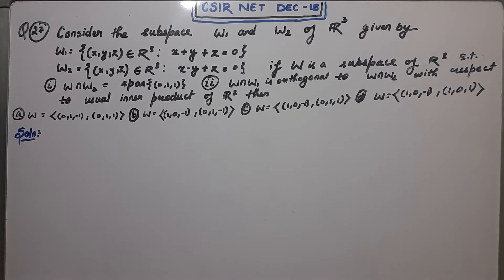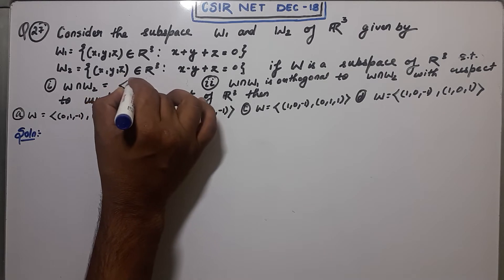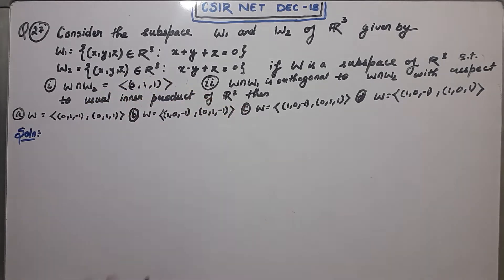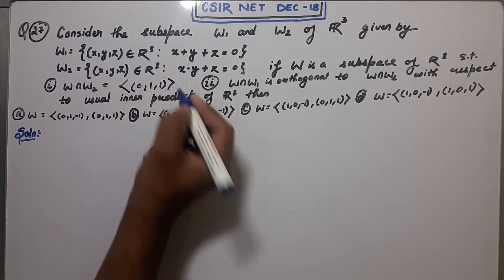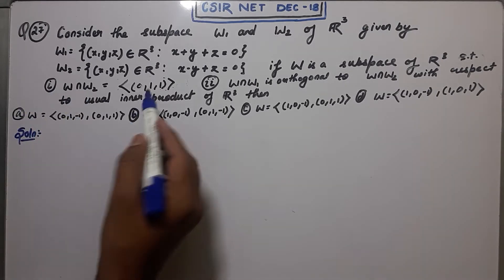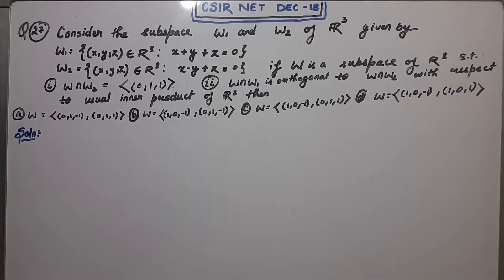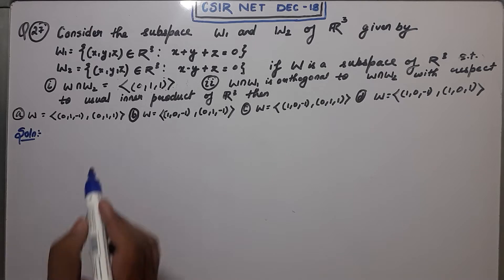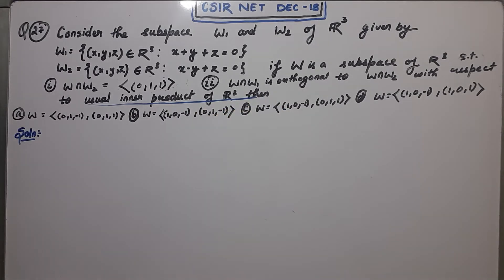Instead of the word 'span' I will use this notation. So your W intersection W2 is the span of the vector (0,1,1). The second condition on W is that W intersection W1 is orthogonal to W intersection W2 with respect to the usual inner product.